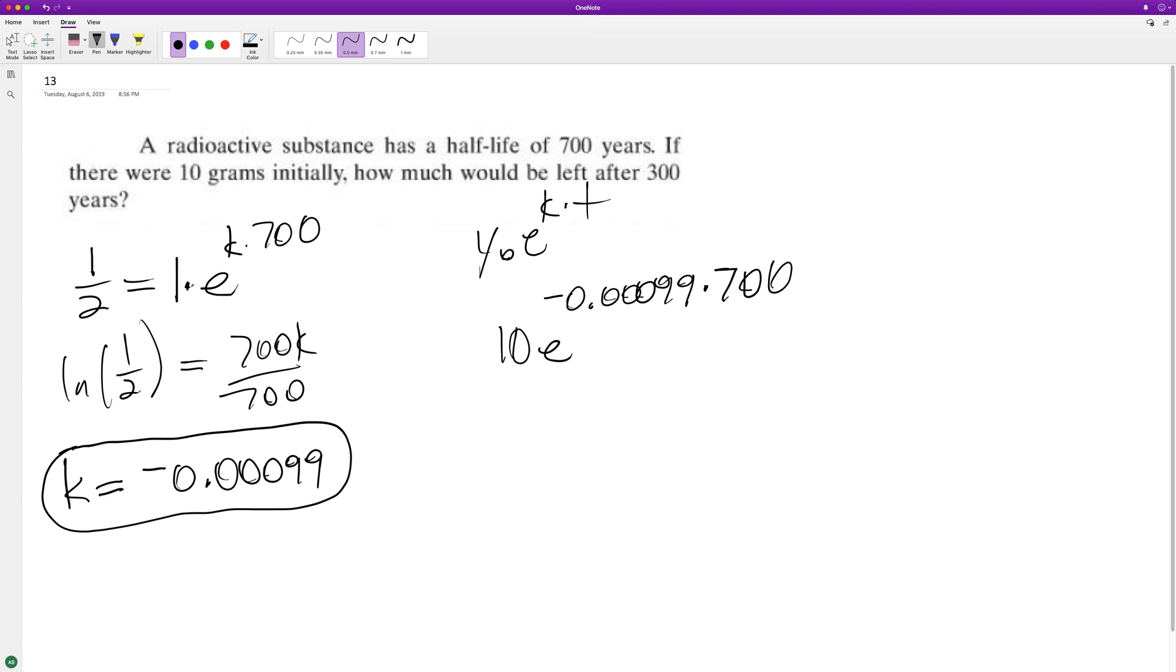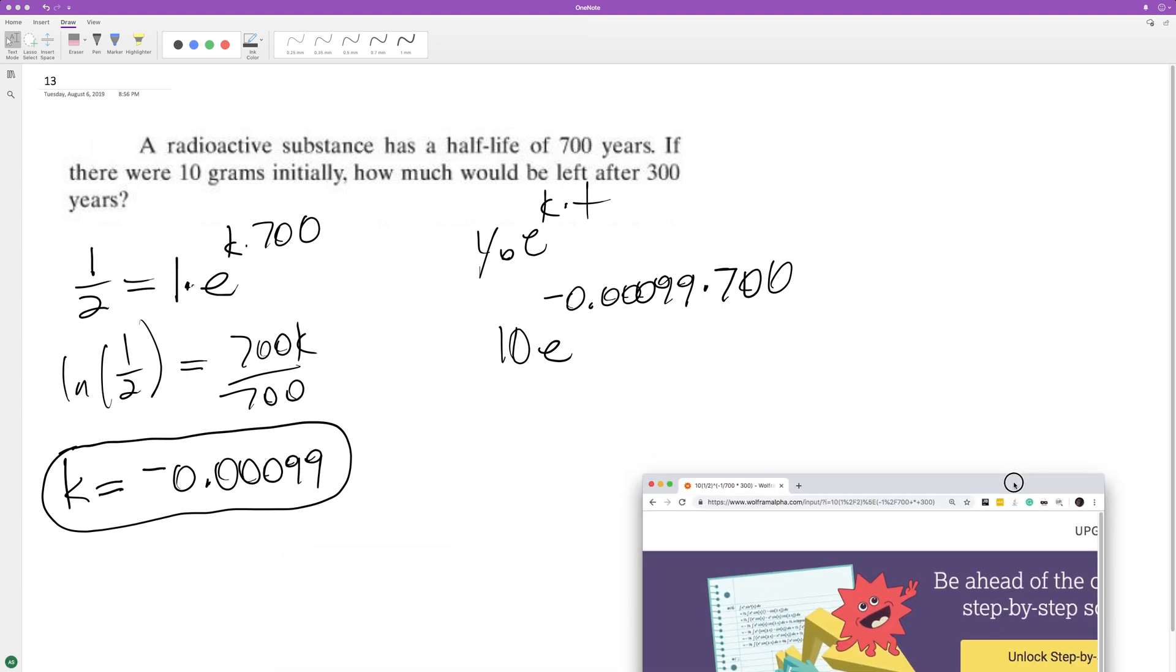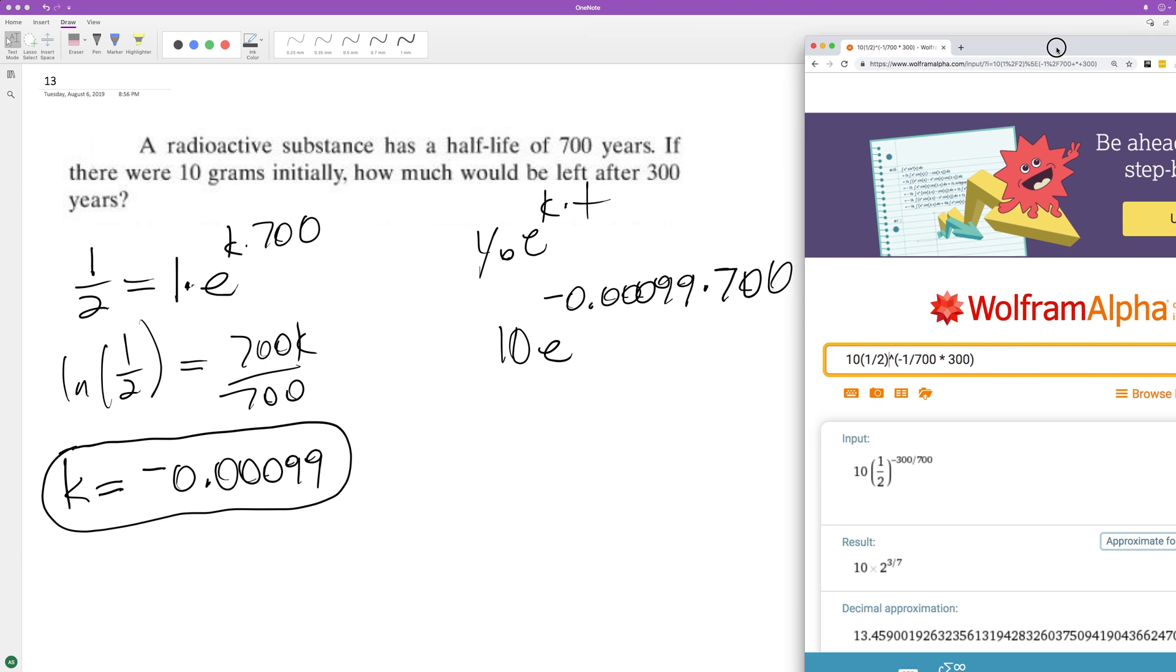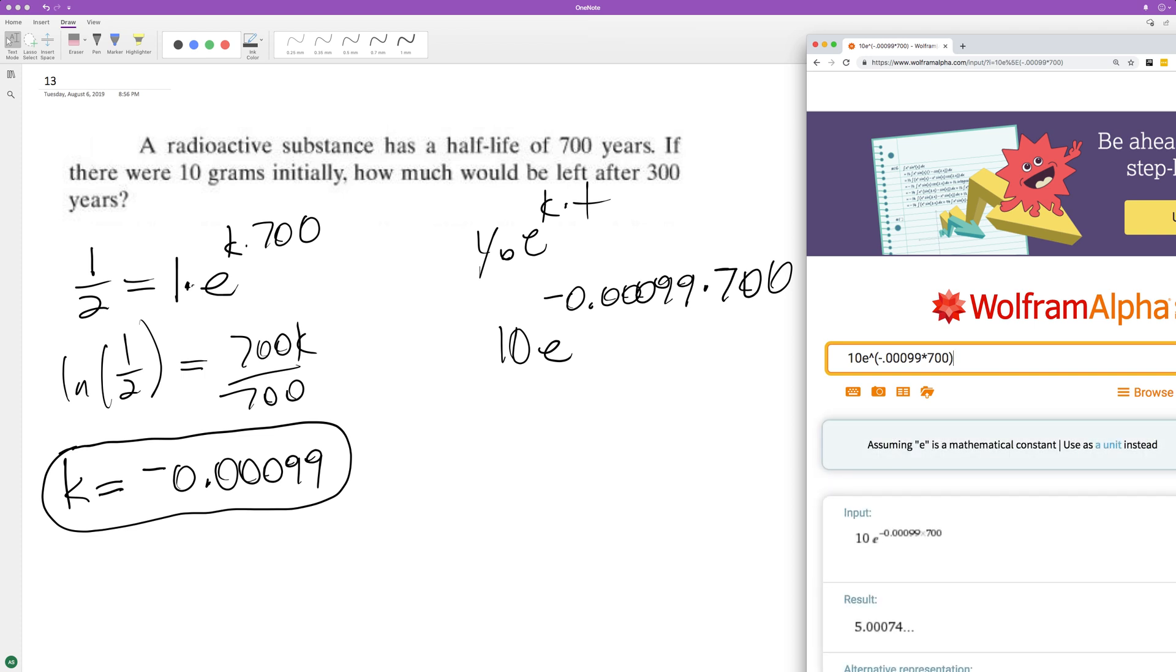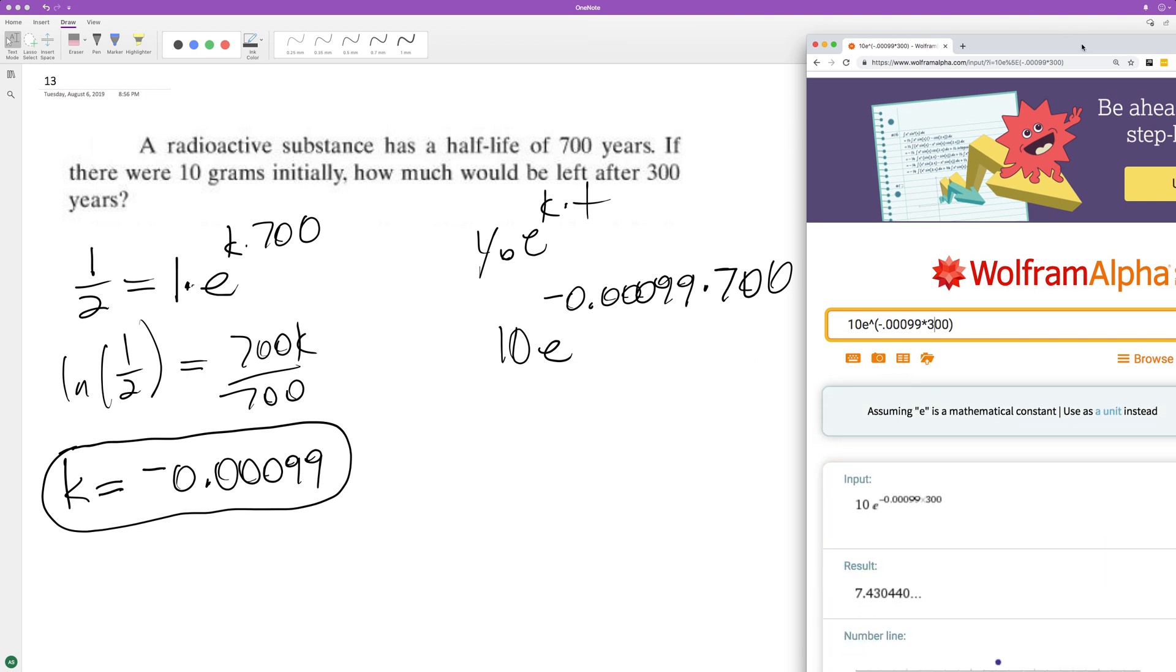If we multiply this out: 10e raised to the negative 0.00099 times 700. Wait, 700? 300 I mean. 700 is the half-life. We end up with 7.43 grams.